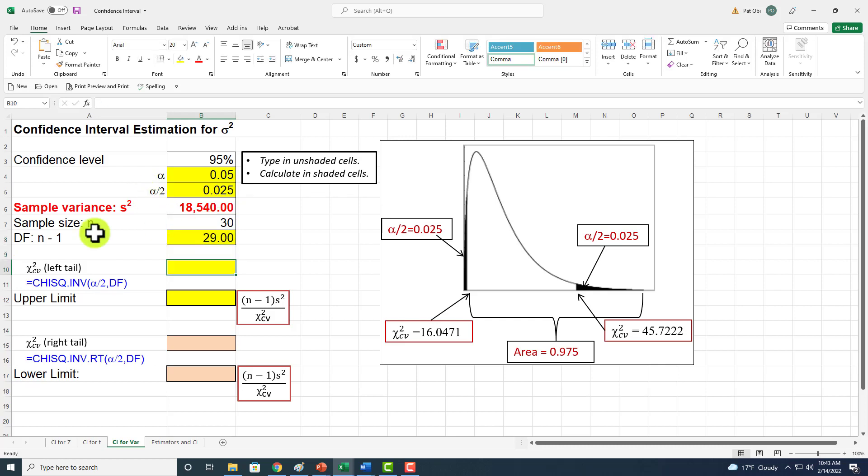To calculate my left tail critical value using Excel function, this is it. This is going to give me the inverse of the left tail probability of the distribution. I'm going to hit equal CHI.INV. I click on alpha over 2, comma, and then degrees of freedom of 29, close. That's the critical value right there.